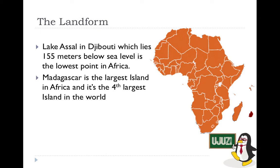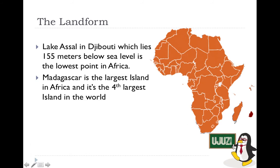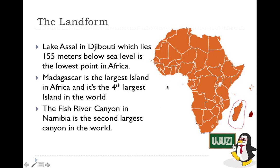Madagascar, which you can find on the southeastern coast of Africa, is the fourth largest island in the world — behind Greenland, New Guinea, and Borneo. It is the largest island in Africa and the fourth largest in the world.